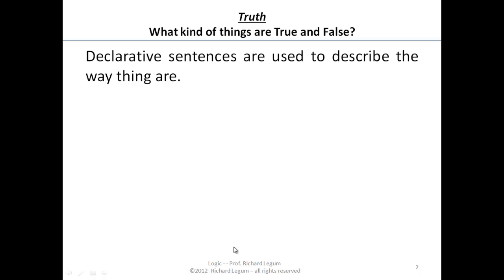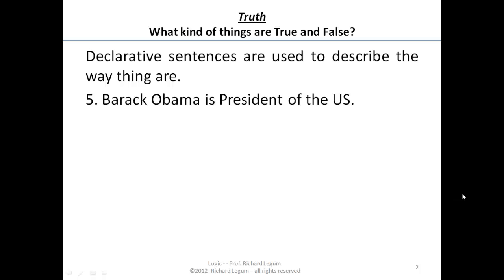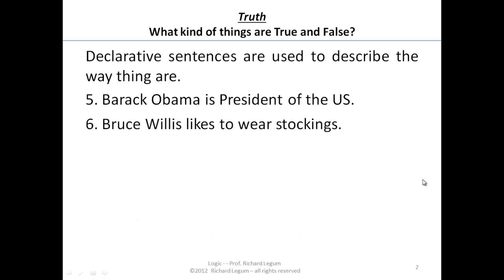As we just noted, declarative sentences are used to describe the way things are. Let's take a couple examples. Barack Obama is President of the United States — a declarative sentence describing the way things are. Bruce Willis likes to wear stockings — it's a declarative sentence intended to describe the way things are or the way they might be.